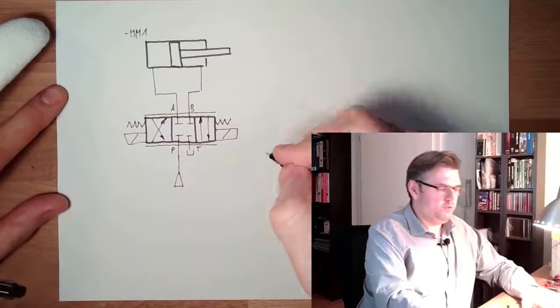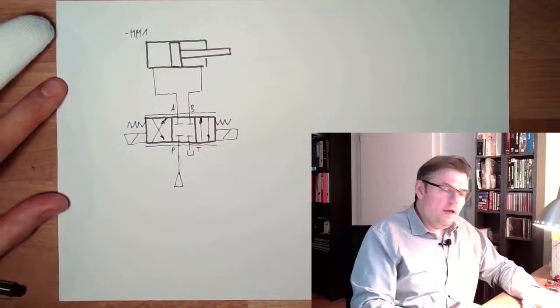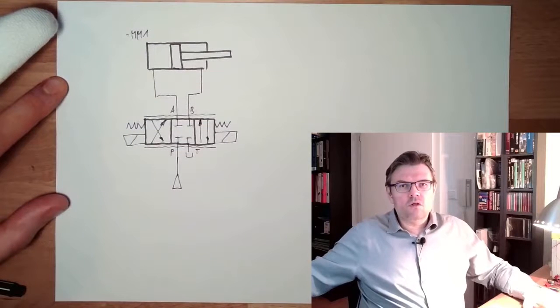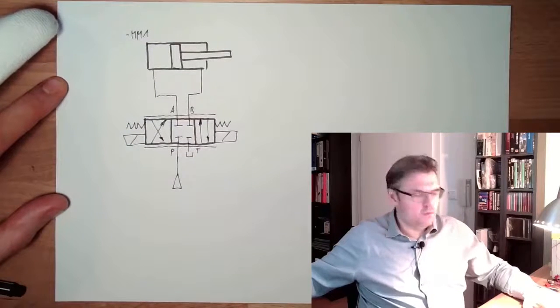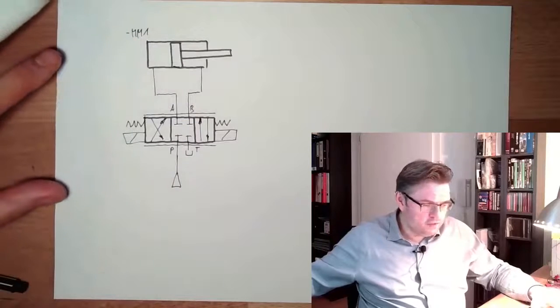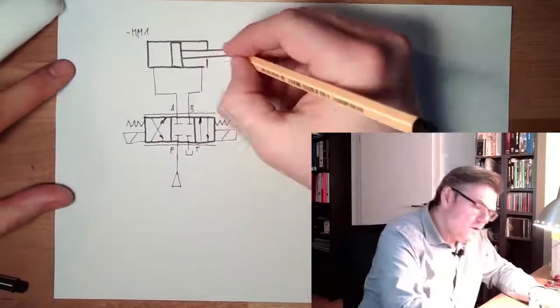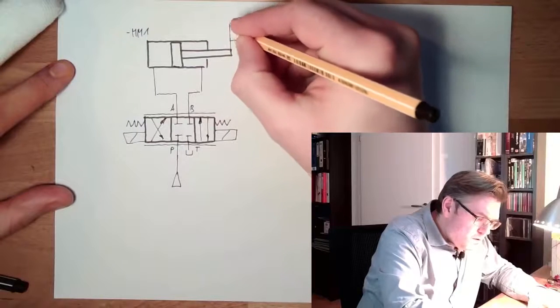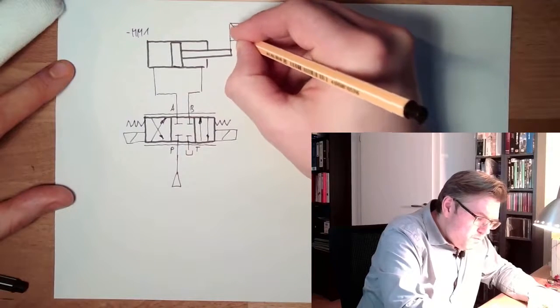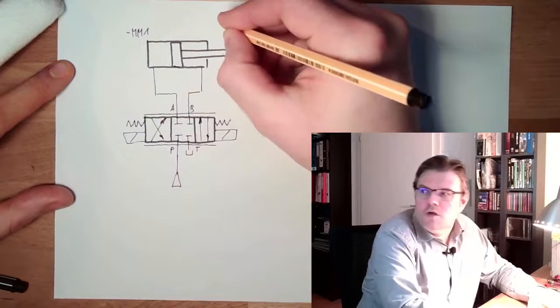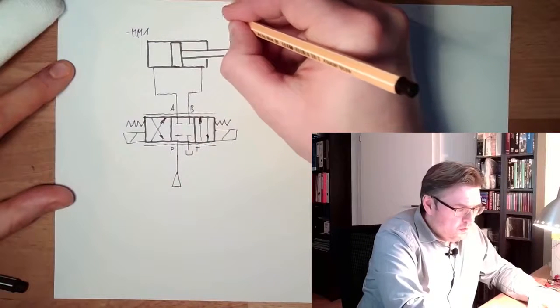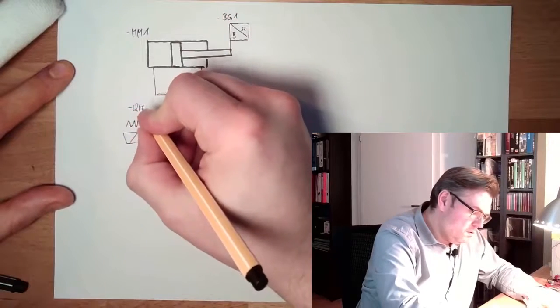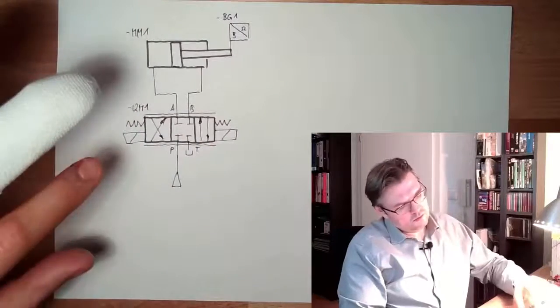And here we have cut the pressure. And we do measure the location of the cylinder. So here is location measurement. B, that's the location, B1. And here we have the QM1, the big valve.